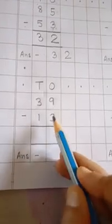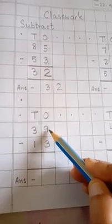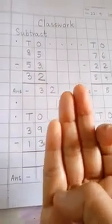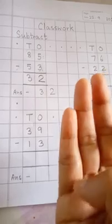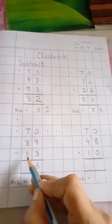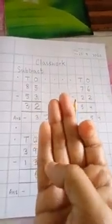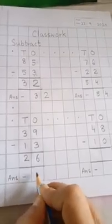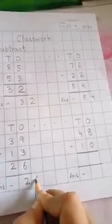Now let us come to the next sum: 39 minus 13. Same way, we start from the ones column from the number below — this is 3. After 3 we count till we reach 9: 4, 5, 6, 7, 8, 9. How many lines? 1, 2, 3, 4, 5, 6 lines — write 6. Now 3 minus 1: after 1 we count till 3 — 2, 3 — 2 lines. So we write 2. Our answer is twenty-six.